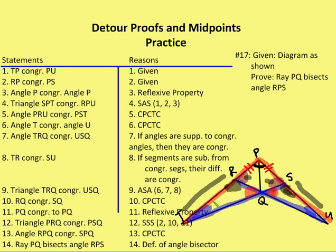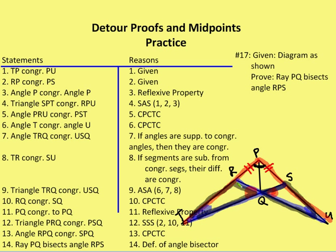So now I have TR congruent to SU, angle QSU congruent to angle TRQ, and from CPCTC angle T congruent to angle U. Triangle TRQ is congruent to triangle USQ because I have my angle, my side by subtraction, and my angle — angle-side-angle — from proving triangle SPT and RPU congruent, so by CPCTC. I have those two triangles congruent.